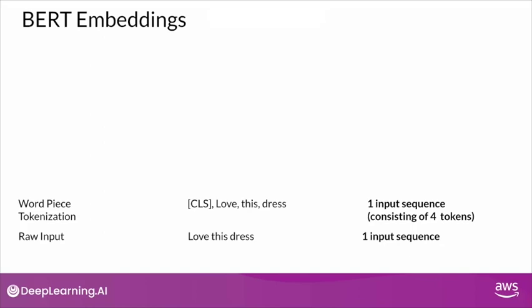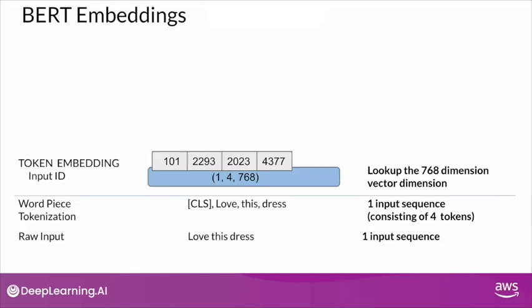If my input sequence consisted of multiple sentences, then I would see another special token, SEP, that separates the tokens from the individual sentences. Once I have the word piece tokens, the next step is to apply token embedding. To determine token embedding for the individual tokens, all I have to do is simply look up the tokens in the 768 dimension vector that I mentioned before.